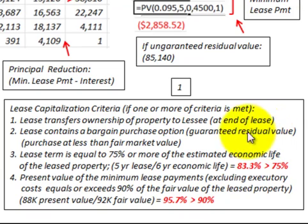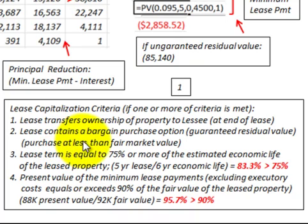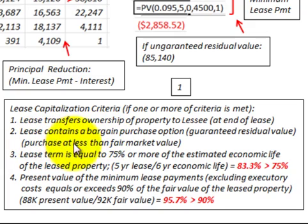The second criteria is that the lease contains a bargain purchase option — in this case we're looking at a guaranteed residual value. The bargain purchase option allows you to purchase the leased equipment for less than the fair market value at the end of the lease.